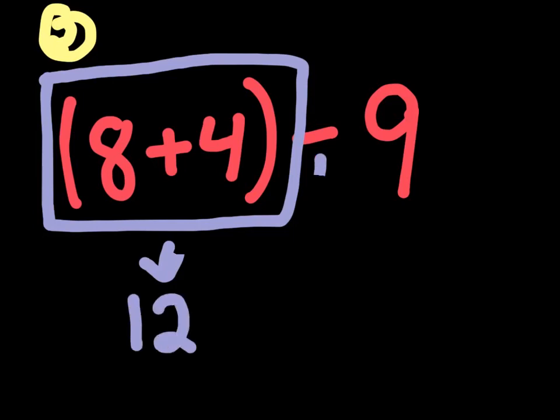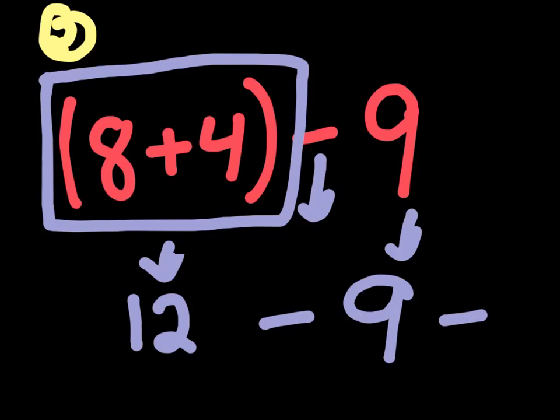We would bring down the negative sign. And we would also bring down the 9. And then we know that 12 minus 9 is just 3. So we get the answer to come out as 3. Let's go into our last question now.